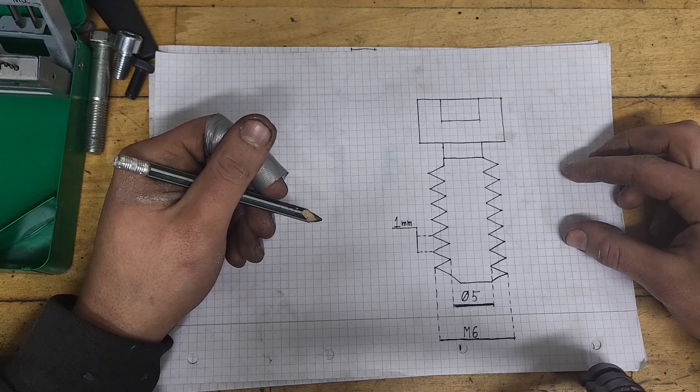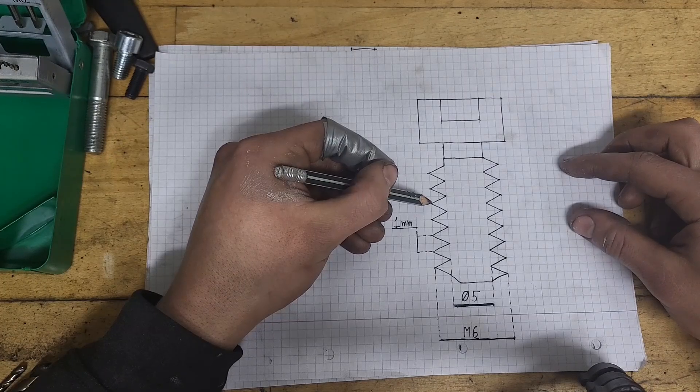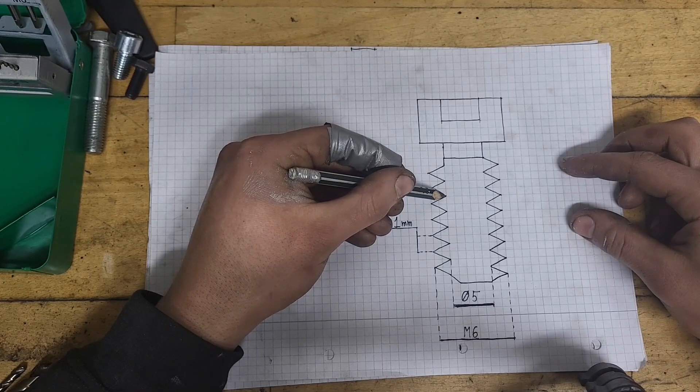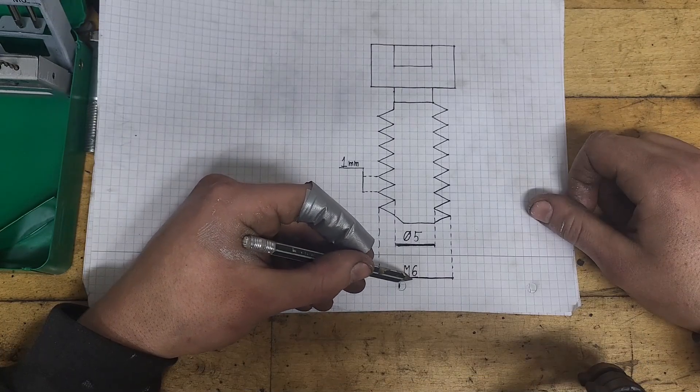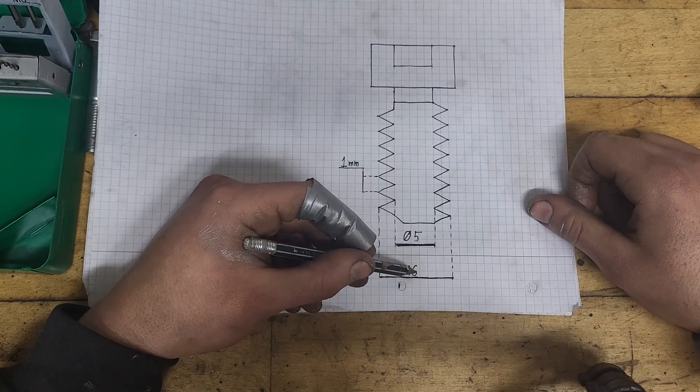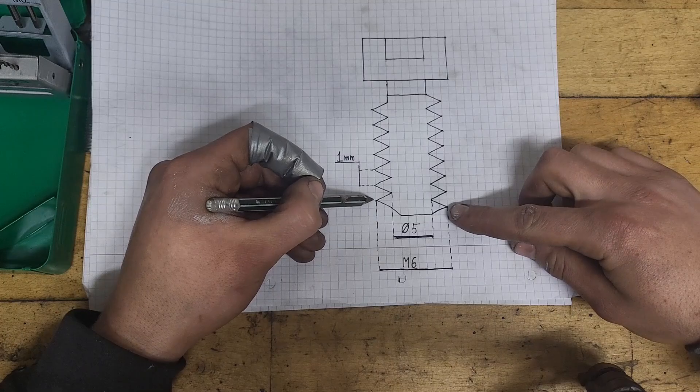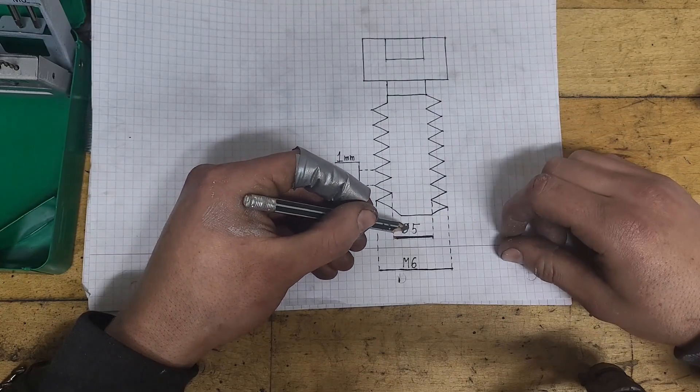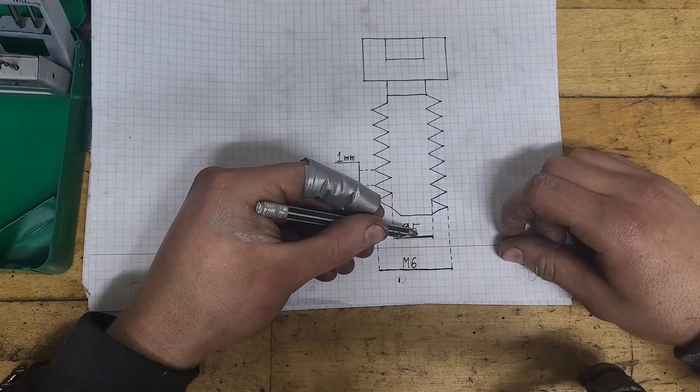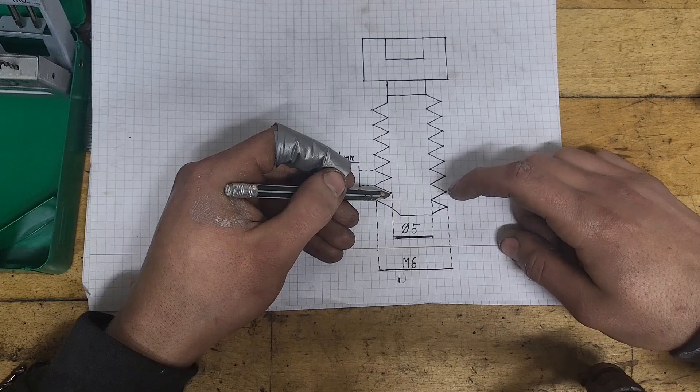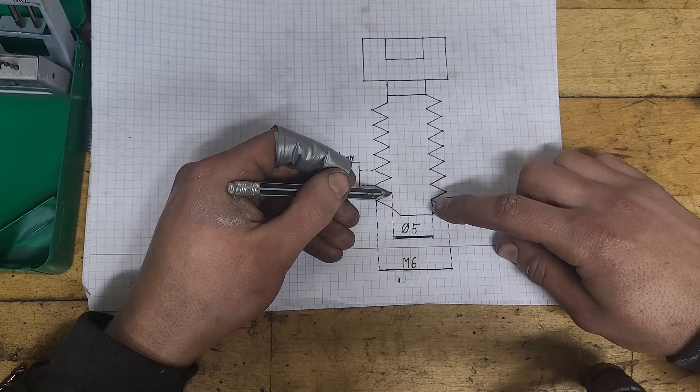To simplify threading in general, you have to visualize the outer points as peaks and the low points as valleys. Whenever you see the M symbol paired with a number, you would always have to think of this number as the measurement between two peaks. Same goes for the diameter symbol. Whenever you see this paired with a number, you will always have to think of this number as the measurement from valley to valley.